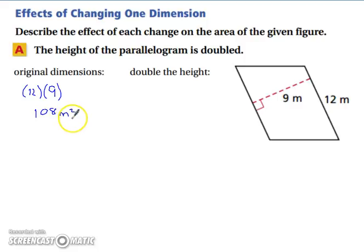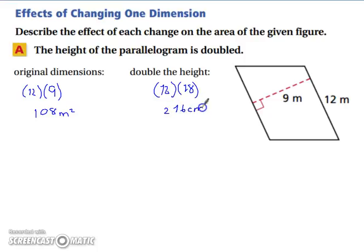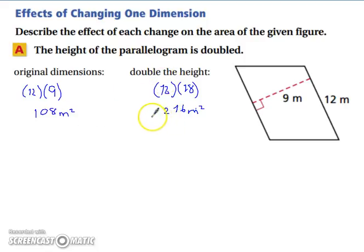Now let's look at what happens when we double the height. Our height is 9, so to double that we're at 18. So now we're going to have 12 times 18, which is 216 meters squared. So what exactly happened when you changed from 108 to 216? If one dimension is doubled, the area will simply be doubled.